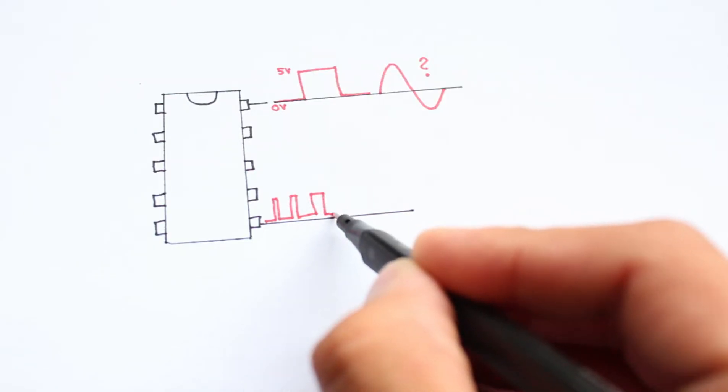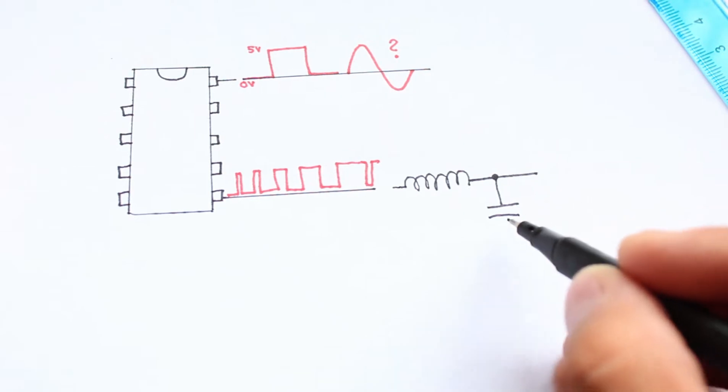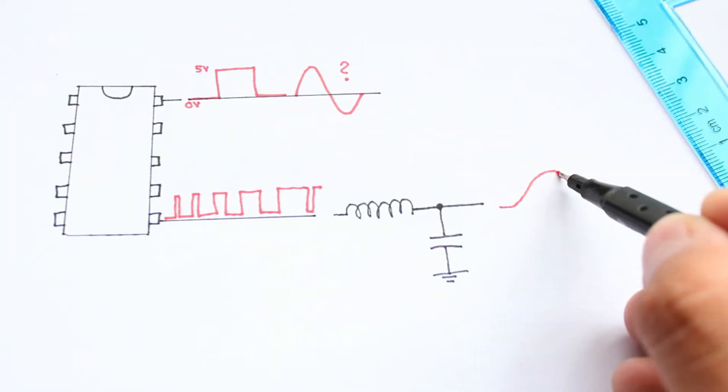Then, by including a low-pass filter, the pulsating signal is smoothed to obtain a well-shaped sinusoidal waveform.